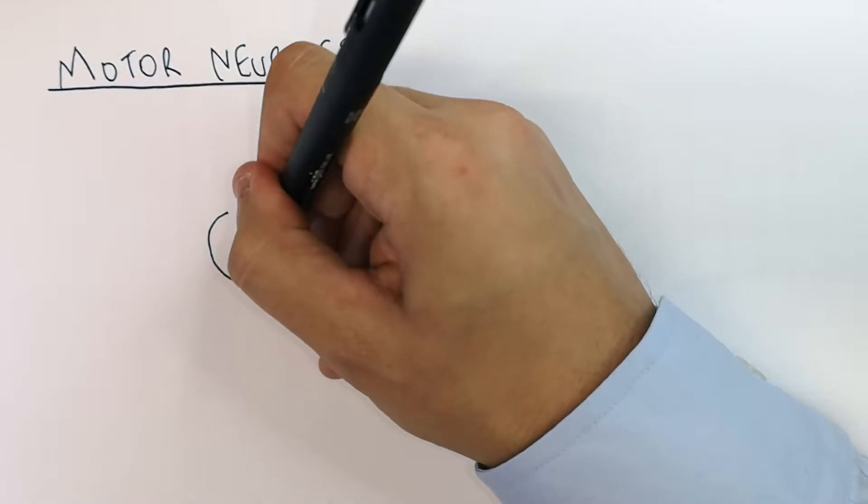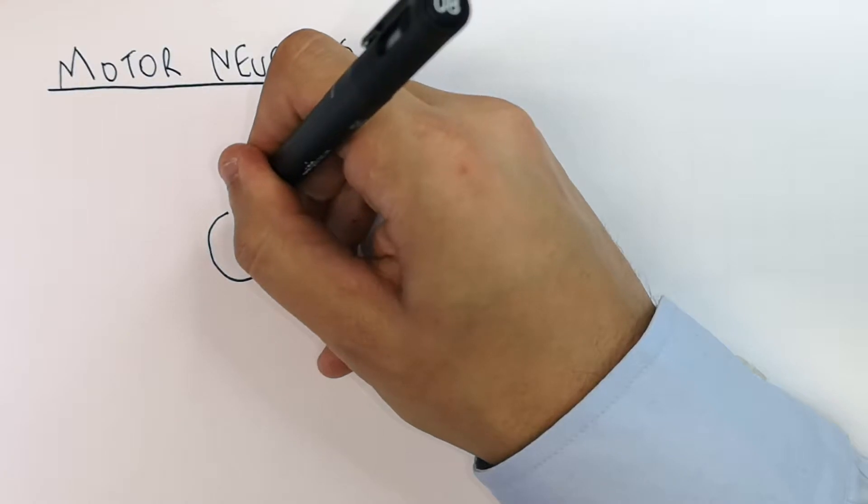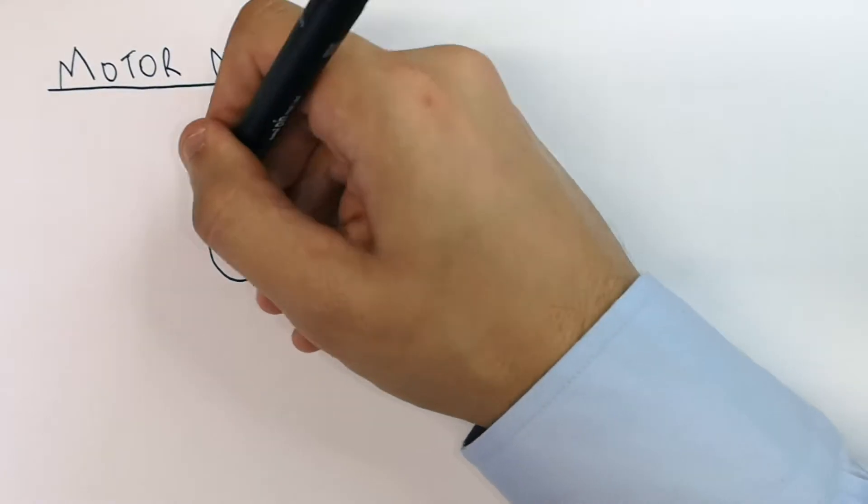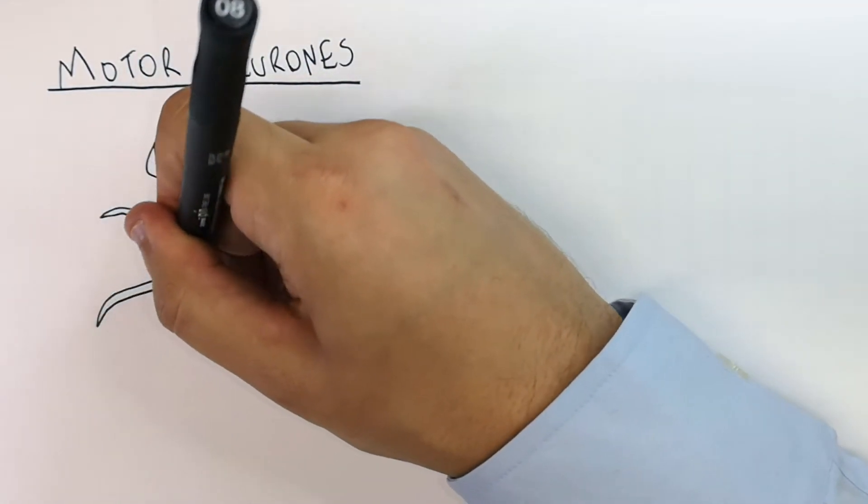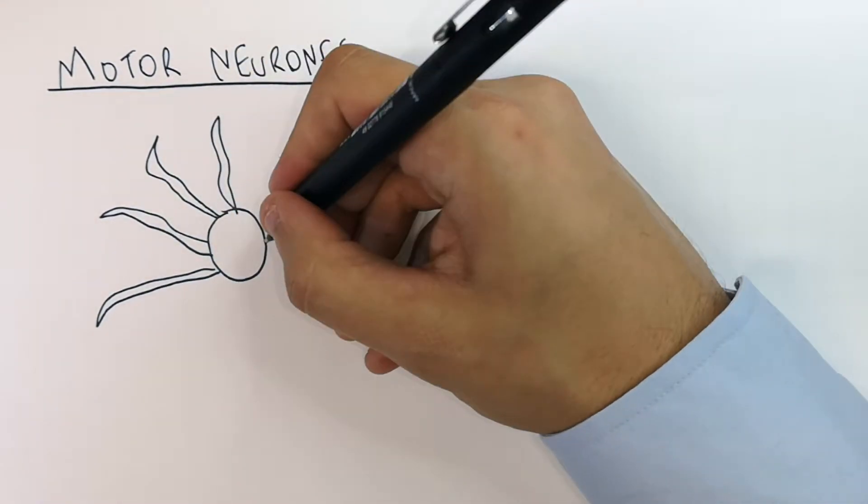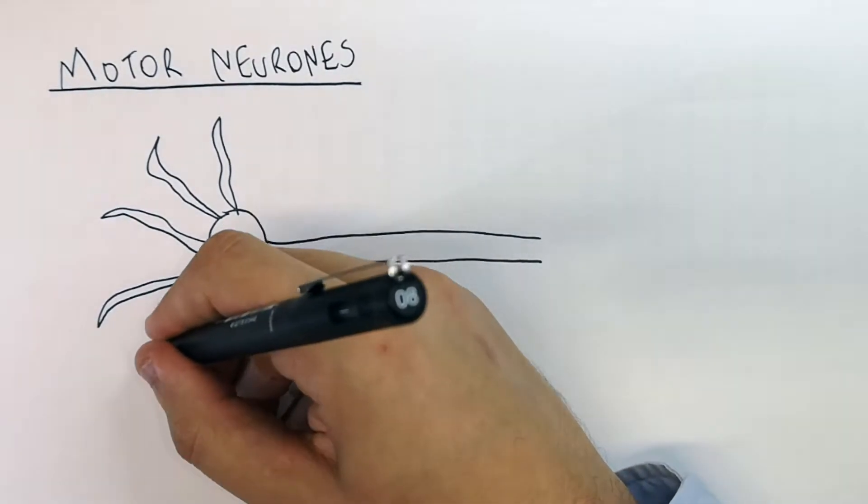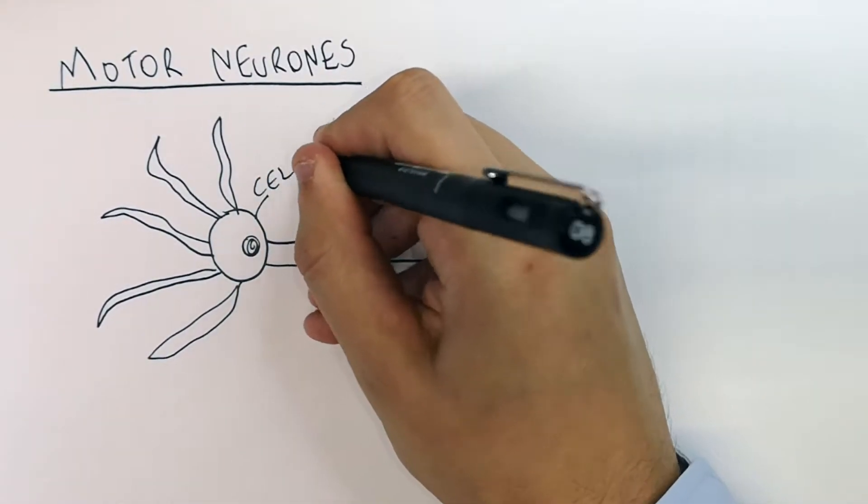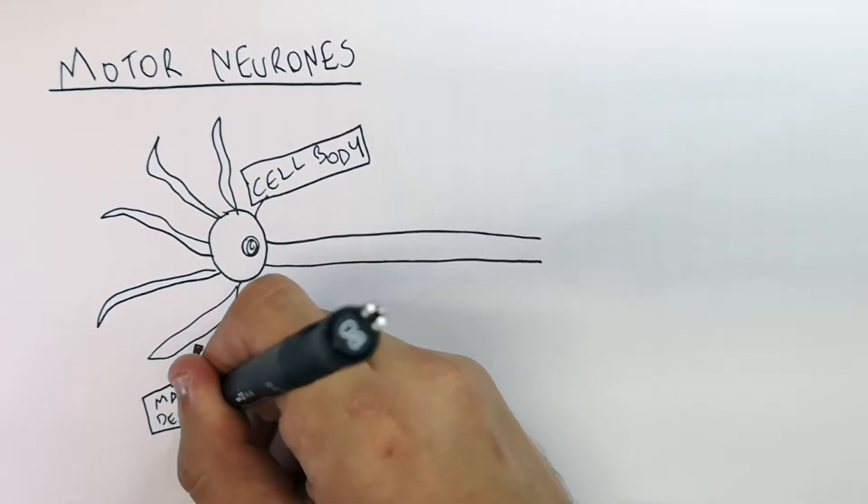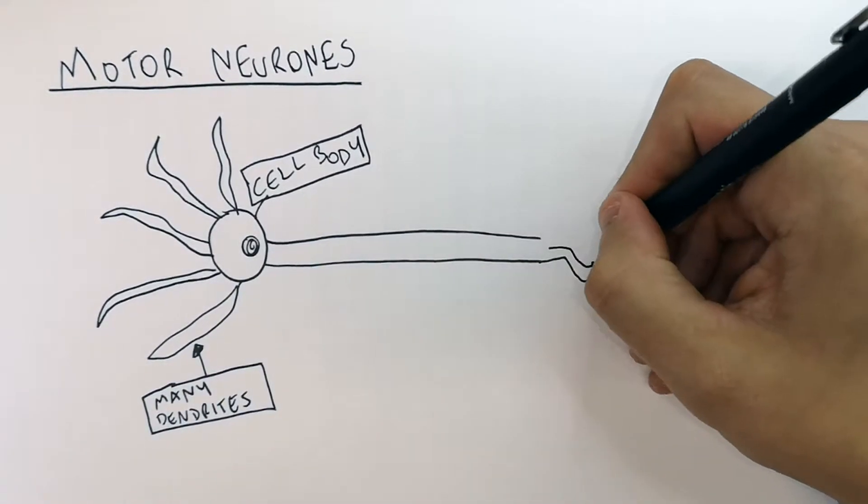As you can see here, the motor neuron has got a cell body which has got the nucleus in it. It's got many dendrites, an axon, and some axon terminals.